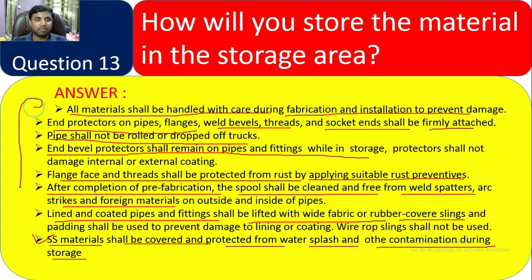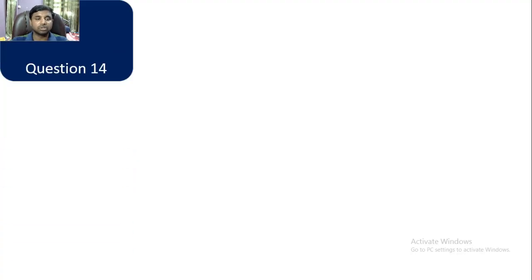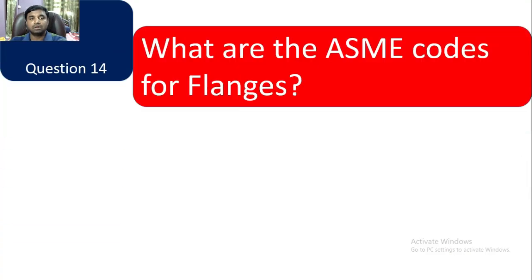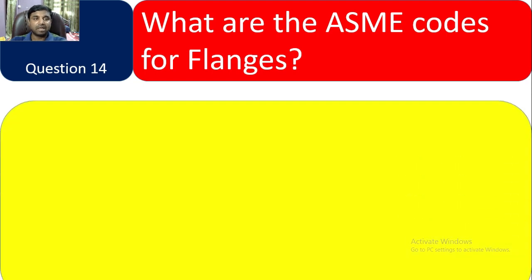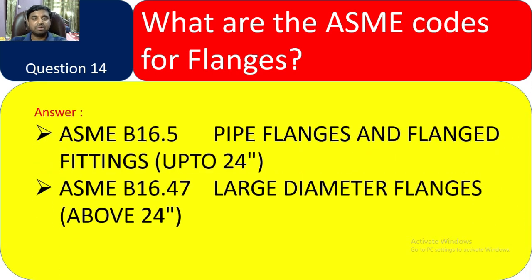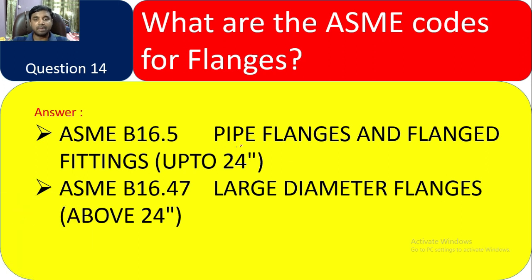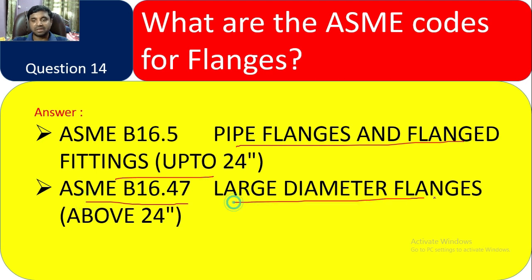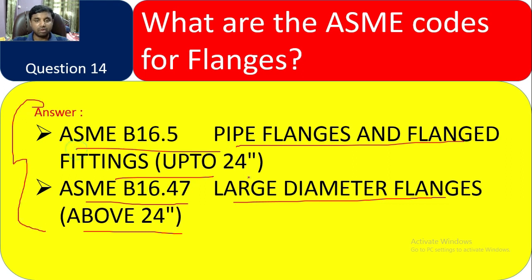Question 14: What are the ASME codes for flanges? The ASME code for flanges is ASME B16.5 — pipe flanges and flange fittings up to 24 inches. For large diameter flanges above 24 inches, the code is ASME B16.47. So there are two codes: one up to 24 inches and another for above 24 inches.